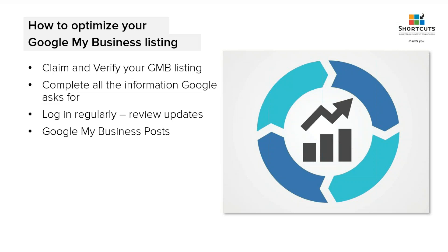Business owners don't realize that anyone can suggest changes to a name or edit your business listing — this includes your competitors. So if you find your business and realize you've never set this information up, claim it right away and verify who you are. Once you claim it and start adjusting your information, you can create Google Posts, which are little entries that appear when your Google My Business listing comes up.